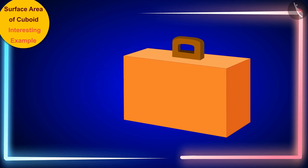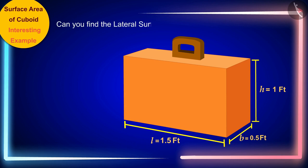Friends, if the length, width, and height of the suitcase are 1.5 feet, 0.5 feet, and 1 feet respectively, then can you find the lateral surface area of this cuboid shaped suitcase? If you want, you can find the solution by stopping the video.